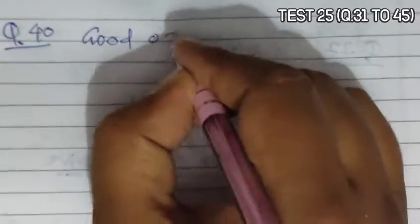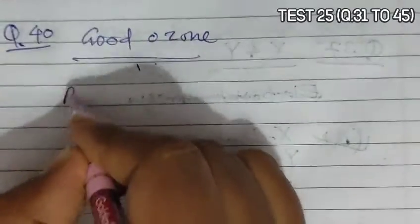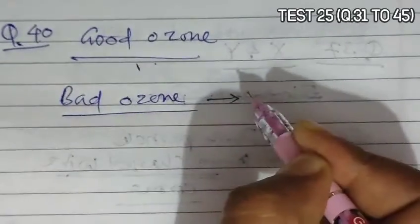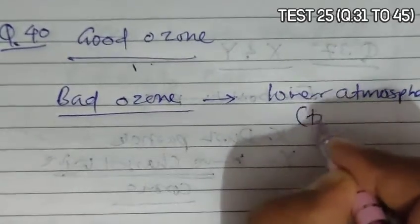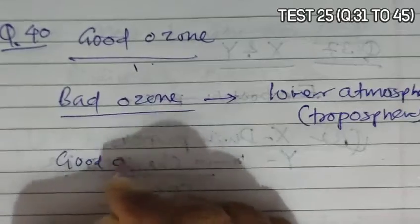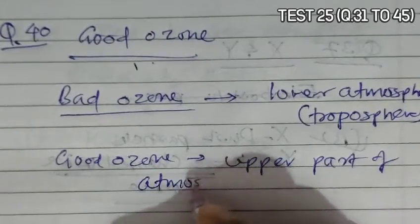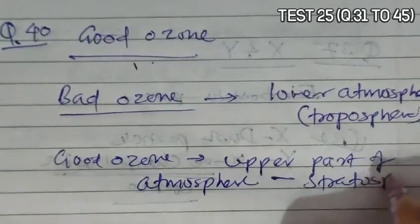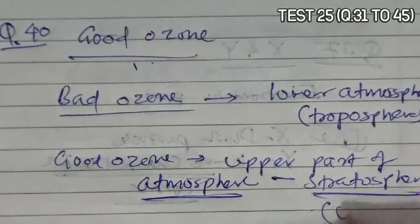Question 40 asks where good ozone is found. Bad ozone is found in the lower atmosphere, the troposphere, and harms plants and animals. Good ozone is found in the upper part of the atmosphere — the stratosphere. So C, stratosphere, becomes the correct answer for good ozone.